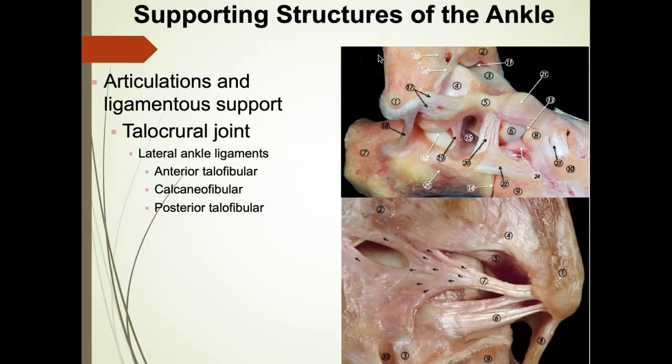If that talus can't glide posteriorly, which osteokinematic motion is going to be lacking? Dorsiflexion — that's the answer.